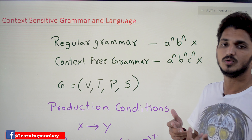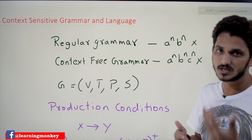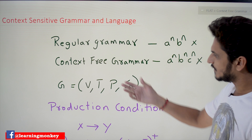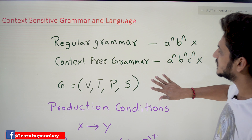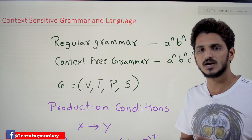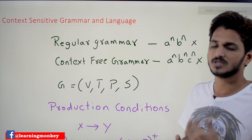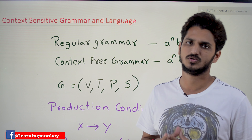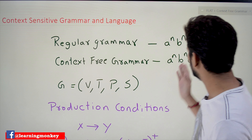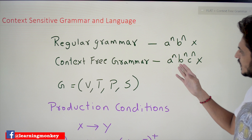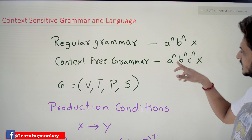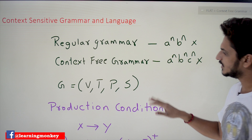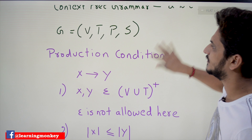The languages that are able to be derived using context sensitive grammar we call context sensitive languages. In this class we will understand the grammar conditions and a little bit about context sensitive grammar. In our next class we will check the example of a^n b^n c^n. Now let's try to understand what context sensitive grammar is.